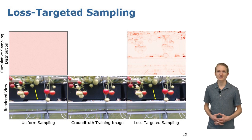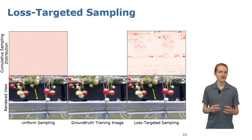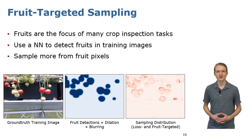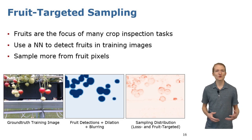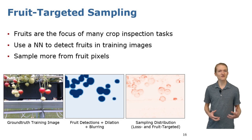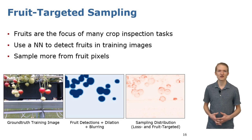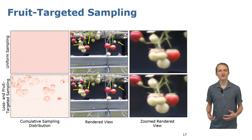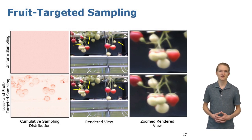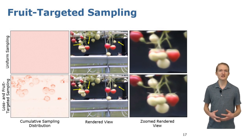However, for automated crop inspection tasks, we want to focus this attention to detail onto the fruits in our scene rather than the background. This leads to our final improvement, fruit-targeted sampling. Here we use a neural network to detect fruits in our training images, and then sample more densely from these fruit pixels when mapping the scene. The image in the bottom right shows that with loss and fruit-targeted sampling, our network now focuses training samples on the regions of high loss within key fruit regions of the scene. This results in higher fidelity mapping of fruit outlines, leaves, and stems, as indicated by the yellow arrows. Without increasing training time, we are now able to detect individual stems within a cluster and identify tiny leaves on the tops of strawberries.